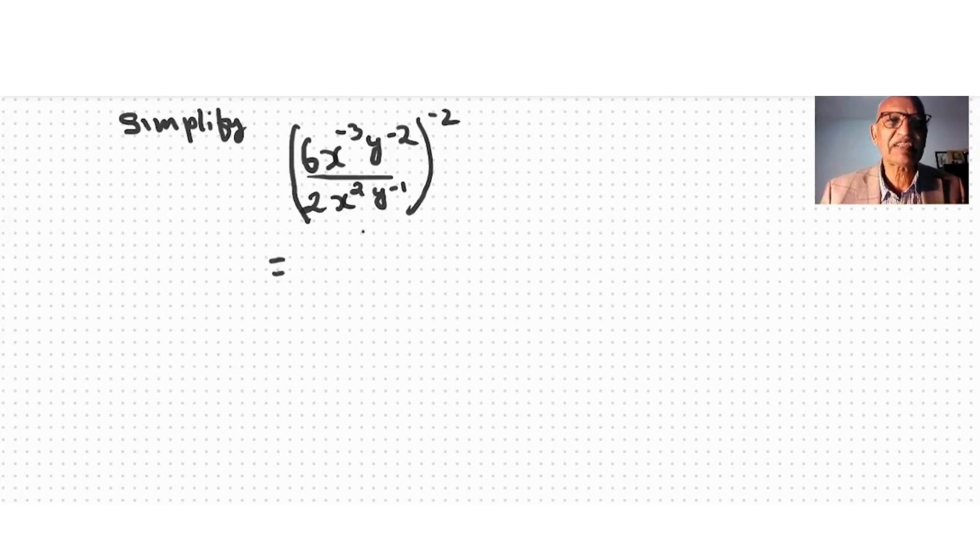equal to, we simplify the bracket, which is 6 over 2 is 3, x to the power of minus 3 minus 2 because of the same base, y is minus 2 minus minus 1, to the power of negative 2. Now